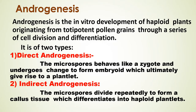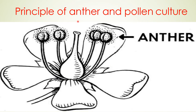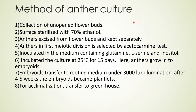The principle of anther and pollen culture is the production of haploid plants by exploiting the totipotency of microspores. In this process, the normal development and function of the pollen cell to become a male gamete is stopped and diverted forcefully to a new metabolic pathway for vegetative cell division.